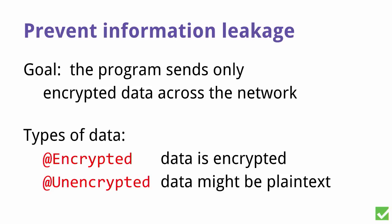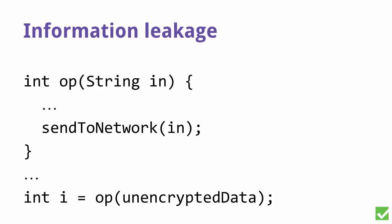Here's an example of one particular type system. The property we want to enforce is that our program never sends unencrypted data over the network — only encrypted data should be sent. We want to distinguish two different kinds of information: encrypted and unencrypted. Here's a simple example where we have an operation that takes some input string and sends that input string over the network, and then a user that passes unencrypted data as the input to this method.